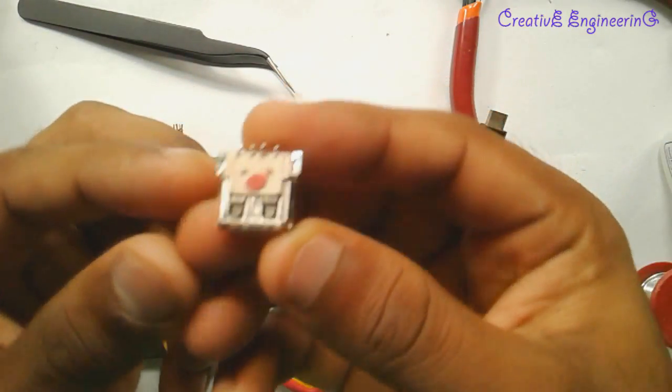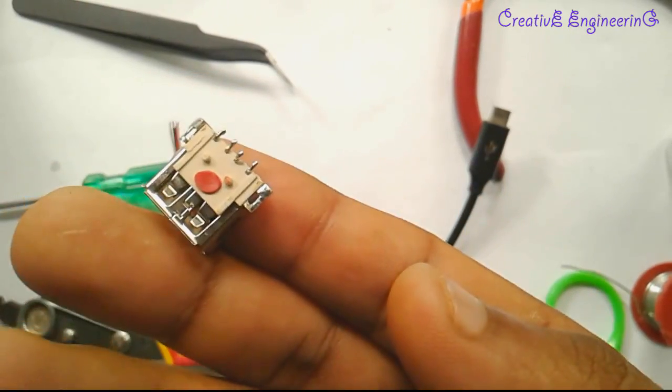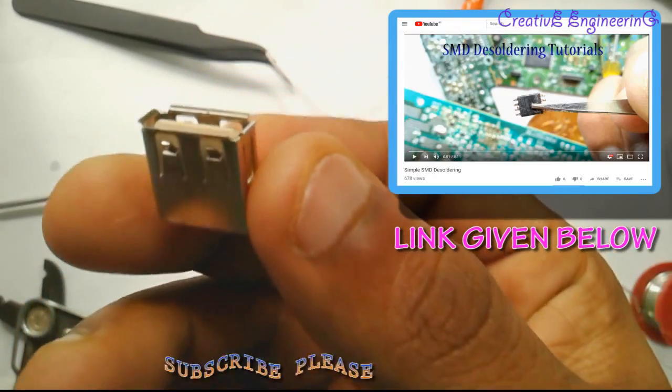The second material is the USB female port. It is present in PCBs like MP3 player, charger, etc. By desoldering method it is obtained.